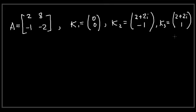What we want is to figure out whether the vectors k1, k2, and k3 are eigenvectors for the given matrix. It's useful to remind ourselves of the definition: a vector k is an eigenvector when A times k is equal to lambda times k for some scalar value of lambda.